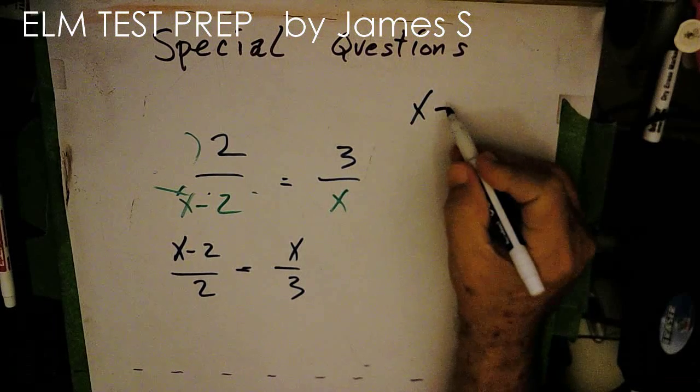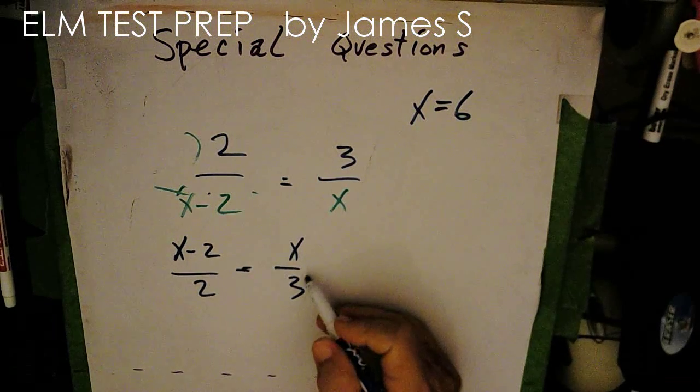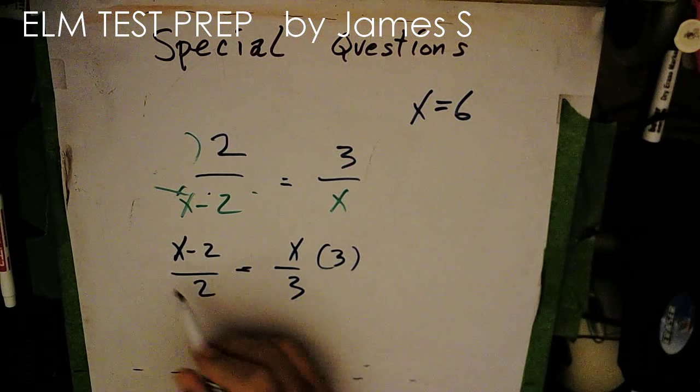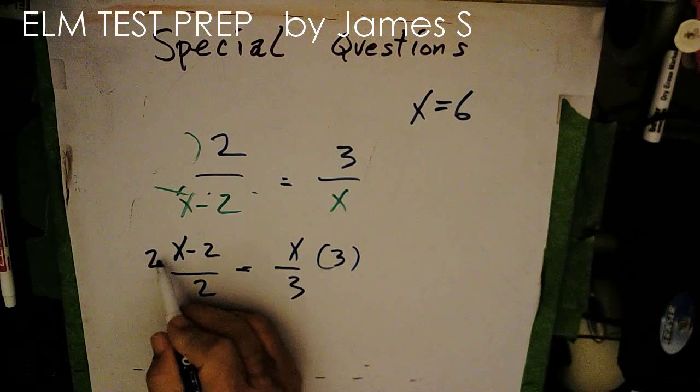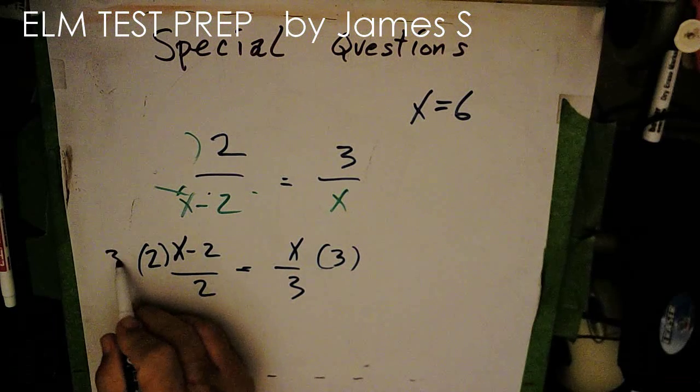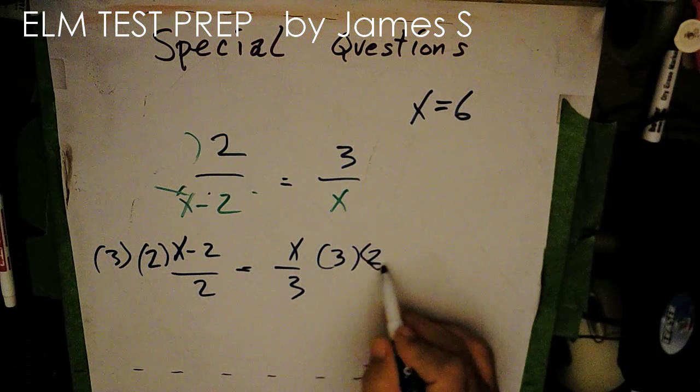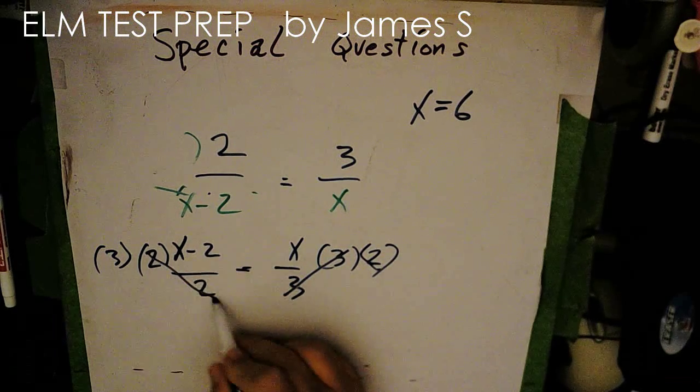Well, we said the other time we said x equals 6 to make it true. So this time I'm going to multiply both sides by 3 and both sides by 2. And if I multiply this by 3, I have to multiply this by 3. If I multiply by 2 here, I have to multiply by 2 here. So the 3's cancel, the 2's cancel.